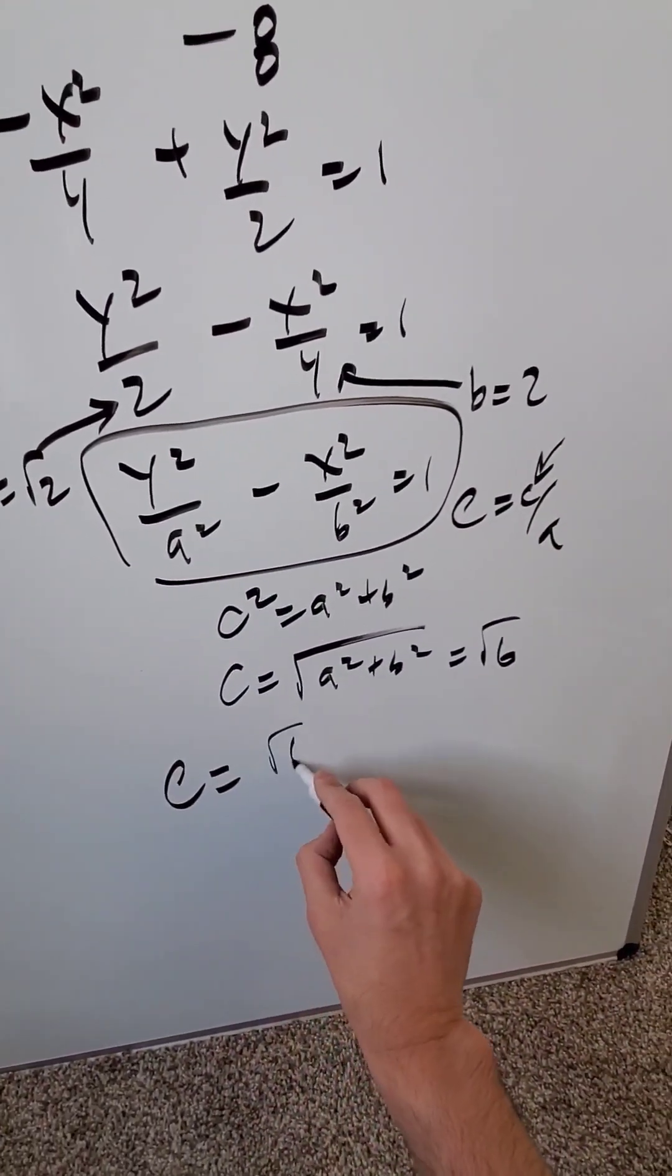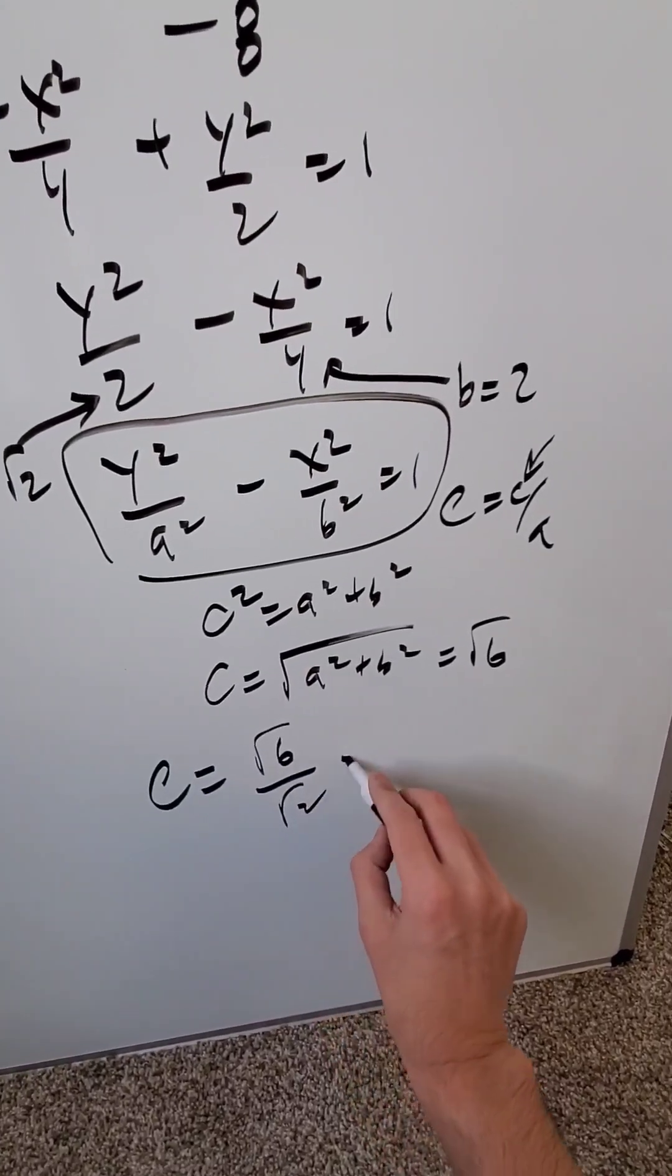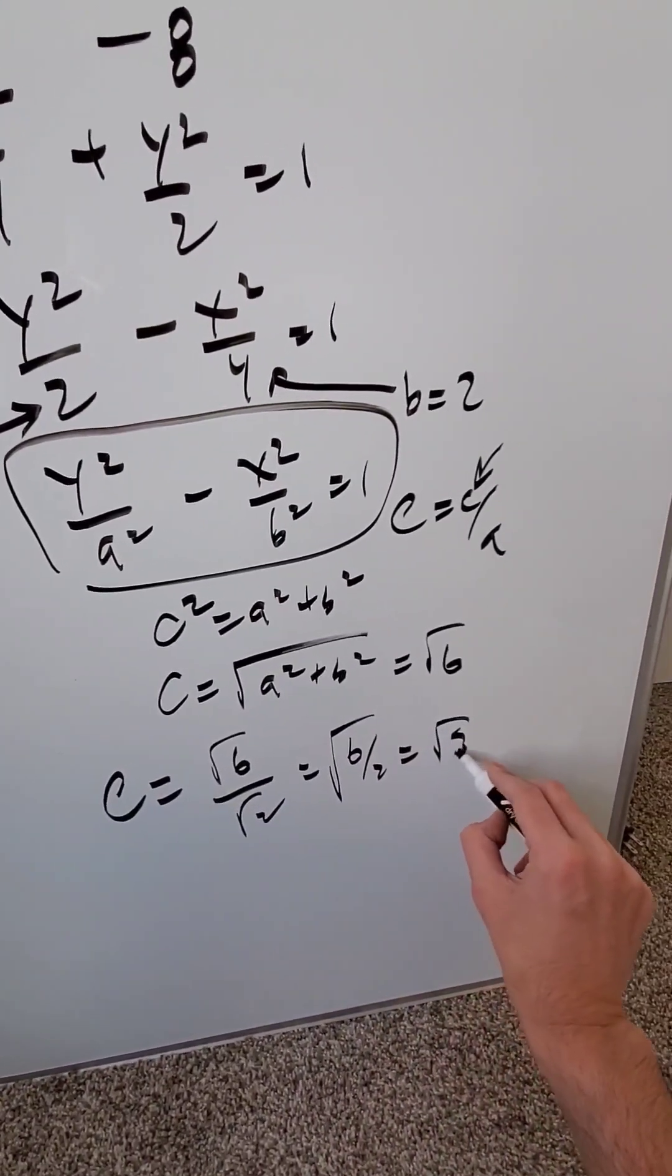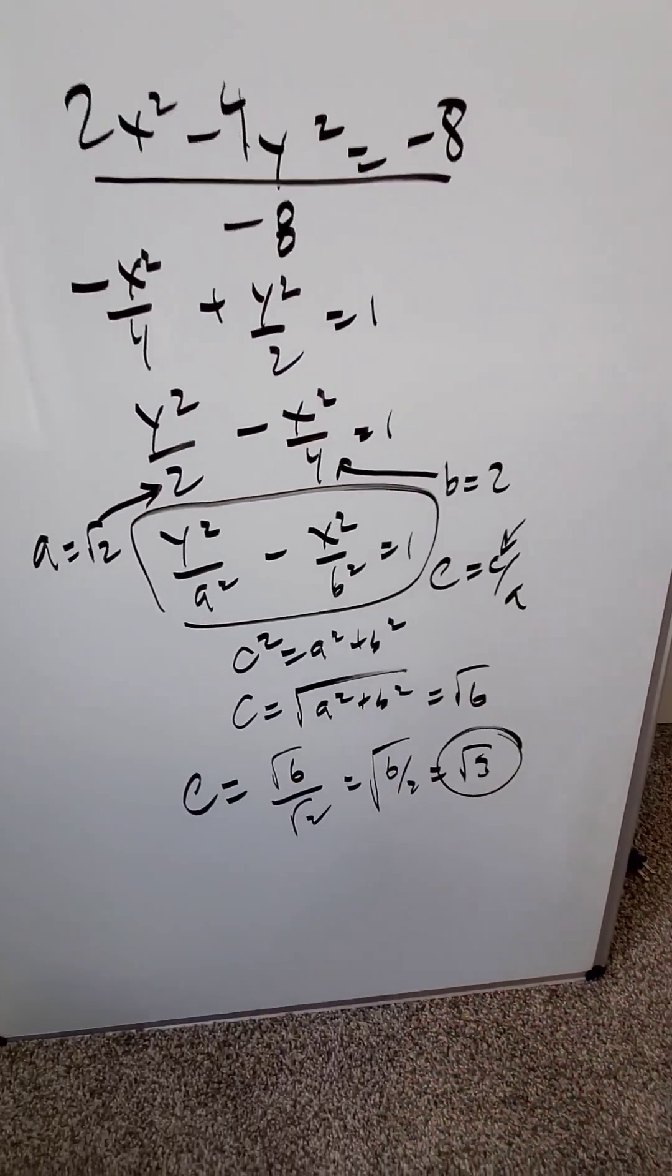Therefore my eccentricity is √6 divided by a which is √2, or you can do √6 over √2 which is √3 and that right there is the eccentricity. We're done.